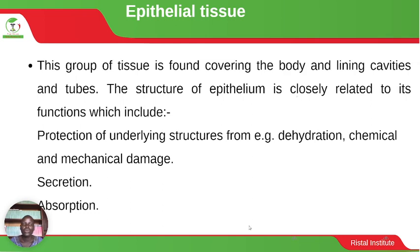Epithelial tissue — this group of tissue is found covering the body and lining cavities and tubes. The structure of epithelium is closely related to its functions, which include protection of underlying structures from dehydration, chemical and mechanical damage. The other functions are secretion and absorption. They mainly occupy tubular surfaces.